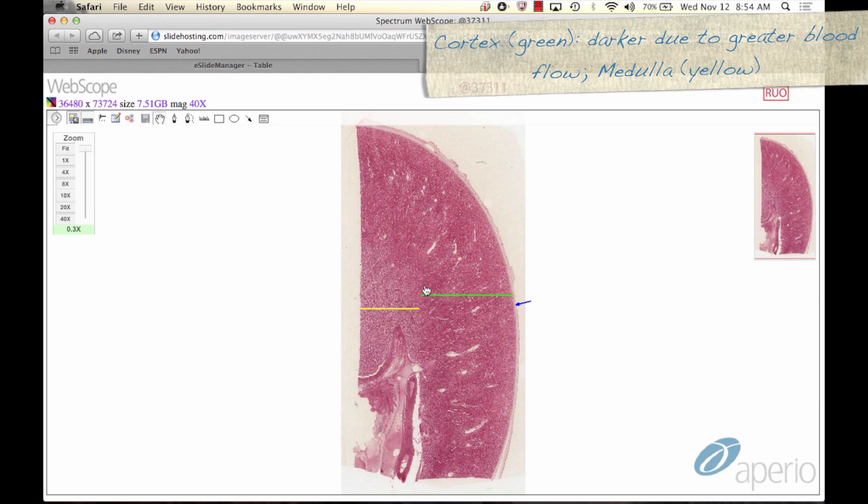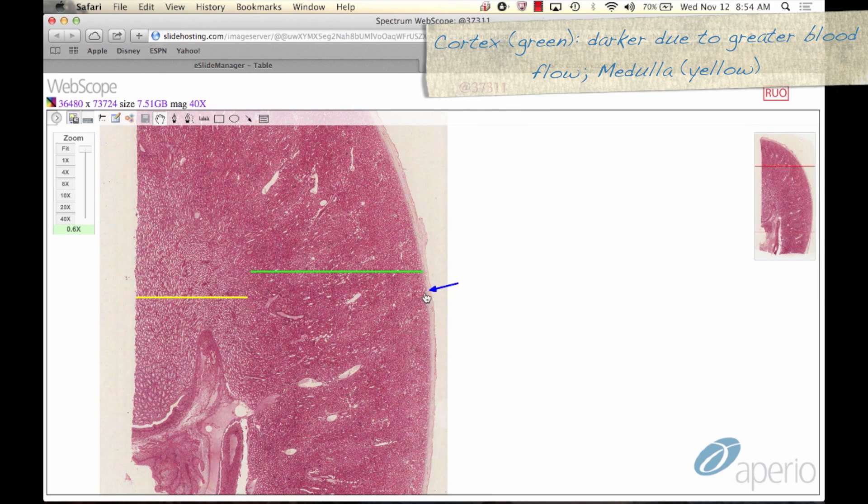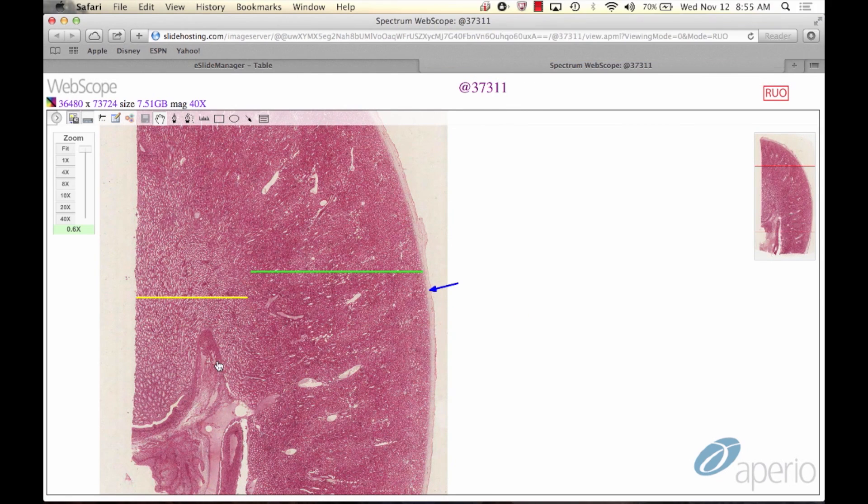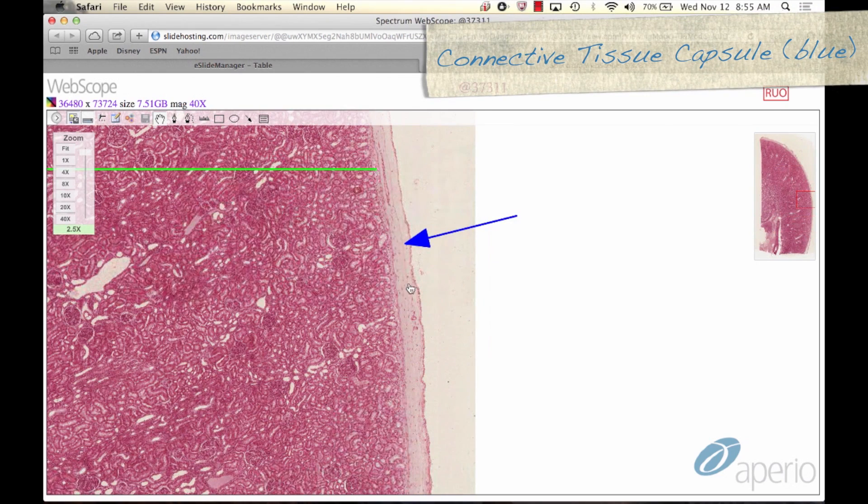The kidney has a darker staining cortex, seen here spanned by the green line, and a lighter staining medulla, spanned here by the yellow line. The cortex stains darker due to greater blood flow. Zooming in, we can see the connective tissue capsule at the blue arrow.